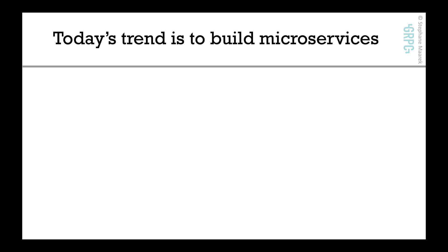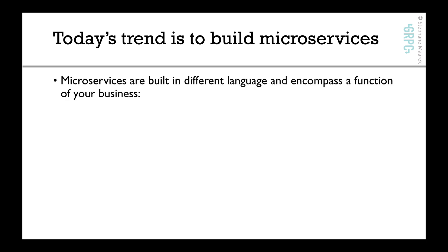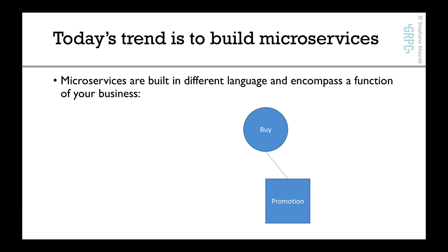Today's trend is to build microservices, and microservices are built in different languages and encompass a function of your business. For example, we have a buy service where users purchase stuff. It may be connected to another microservice written in another language called a promotion service. Maybe you'll sell something for $100 but the promotion service says it's on promotion — it's $80. So the buy microservice and the promotion microservice are connected.